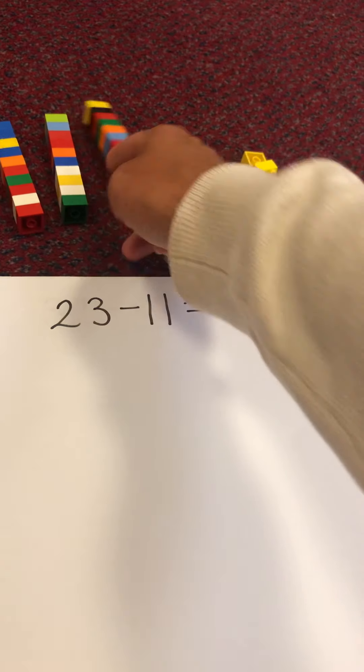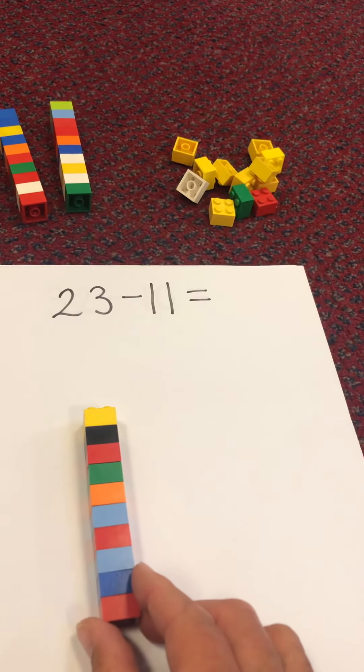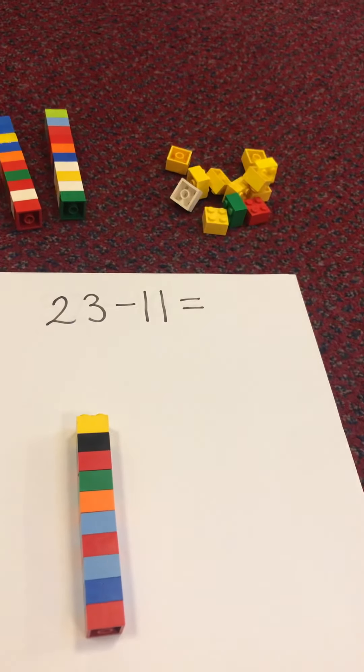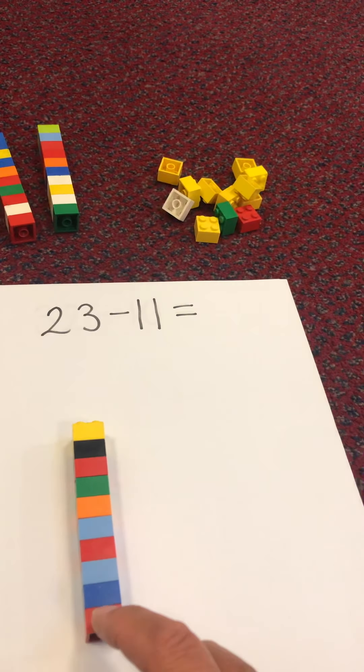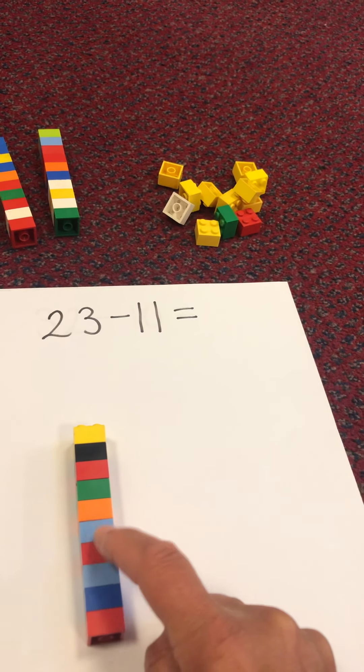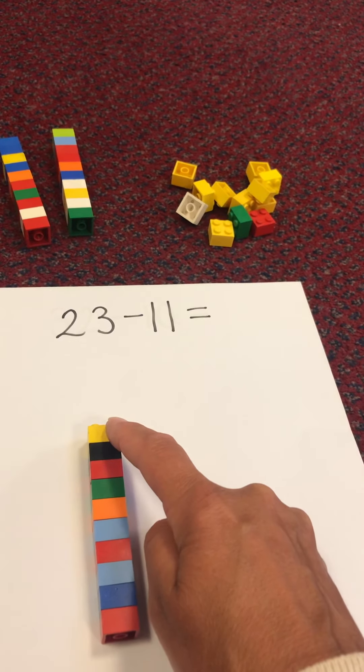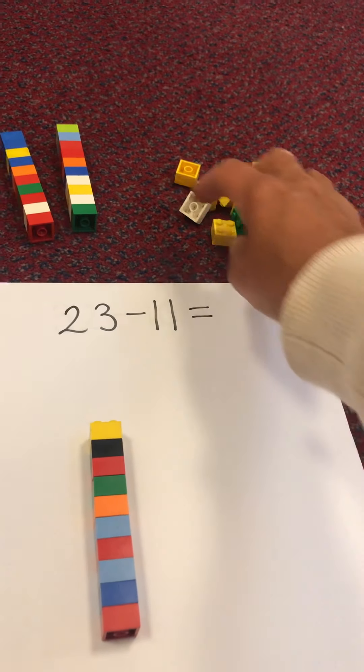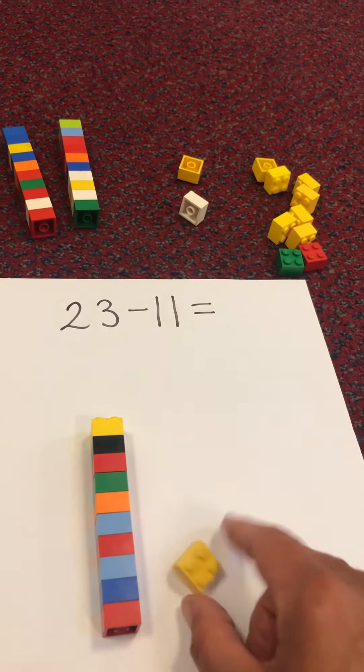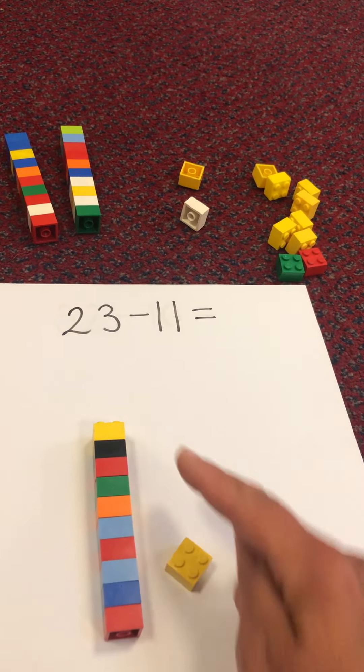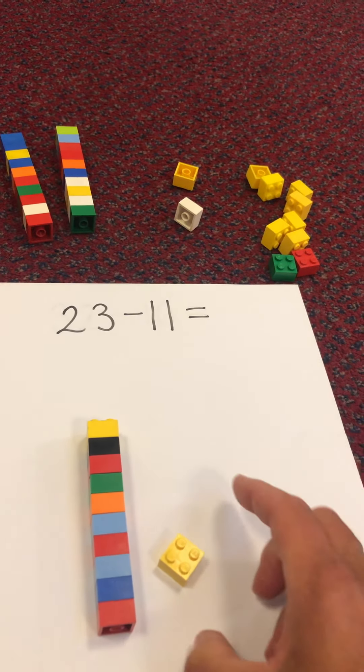Now I'm using some Lego to help me, so this is my Lego ten stick. Let's just count, we've got ten. One, two, three, four, five, six, seven, eight, nine, ten. And that means we don't have to count out ten individual pieces of Lego because we know that there are ten here.